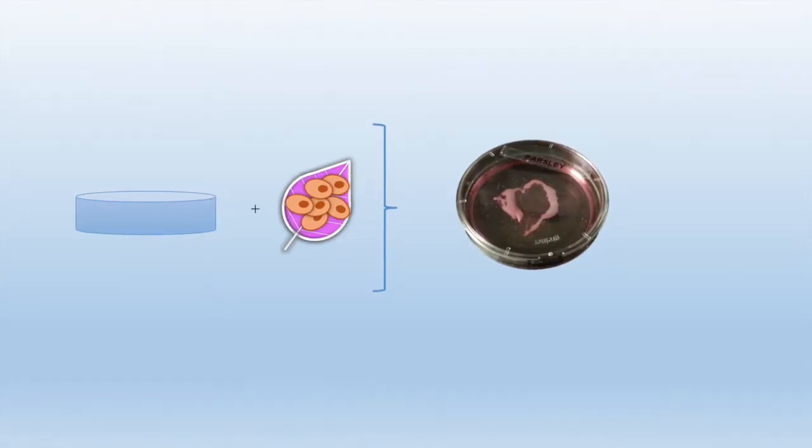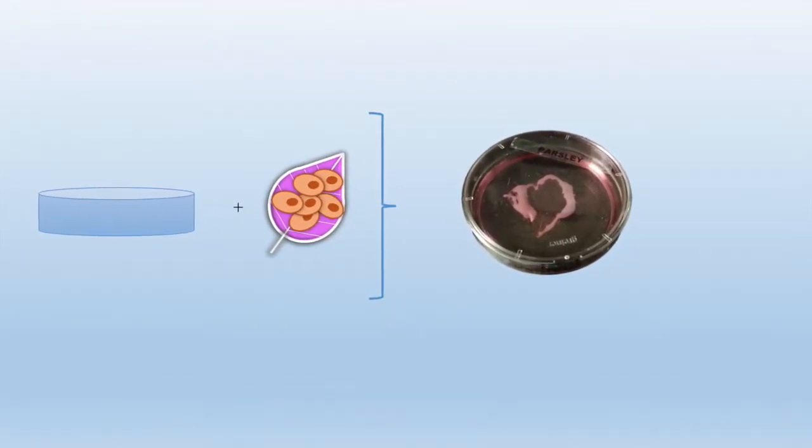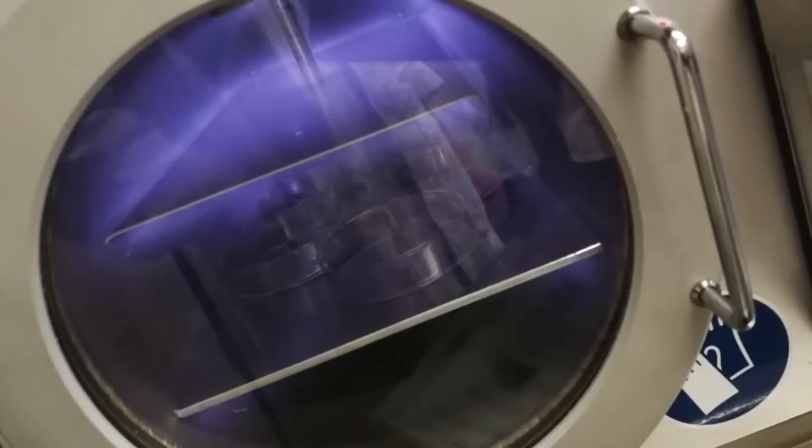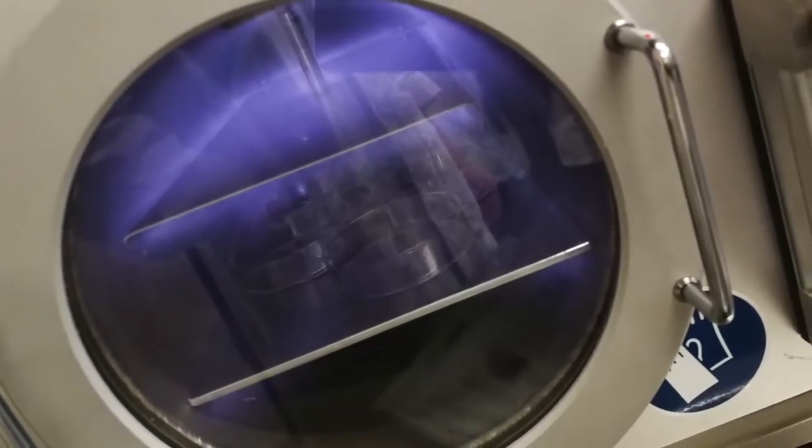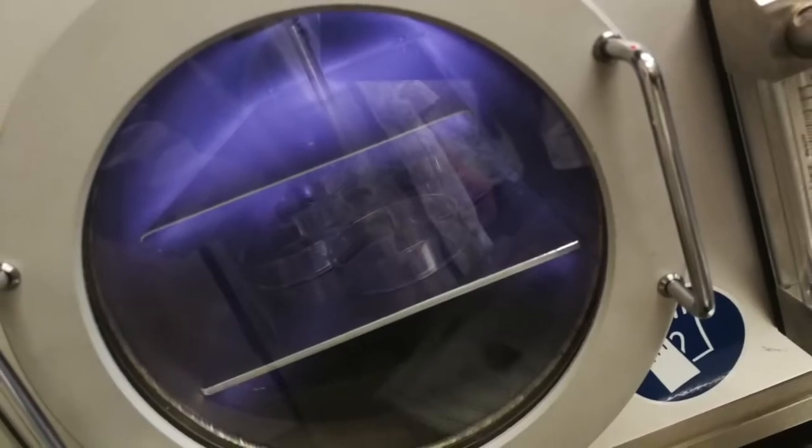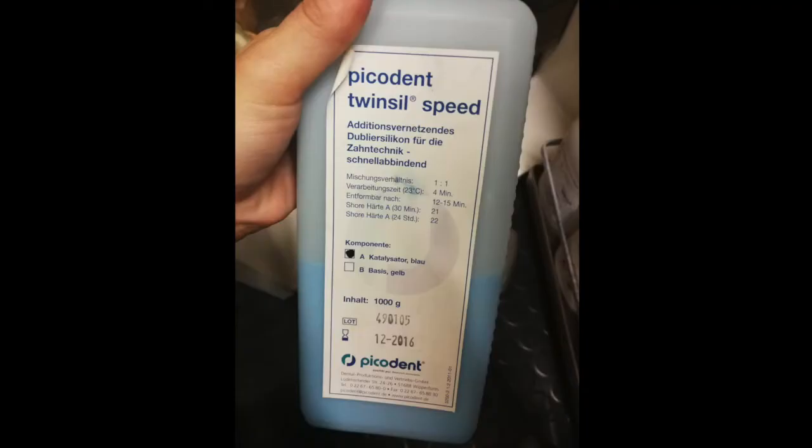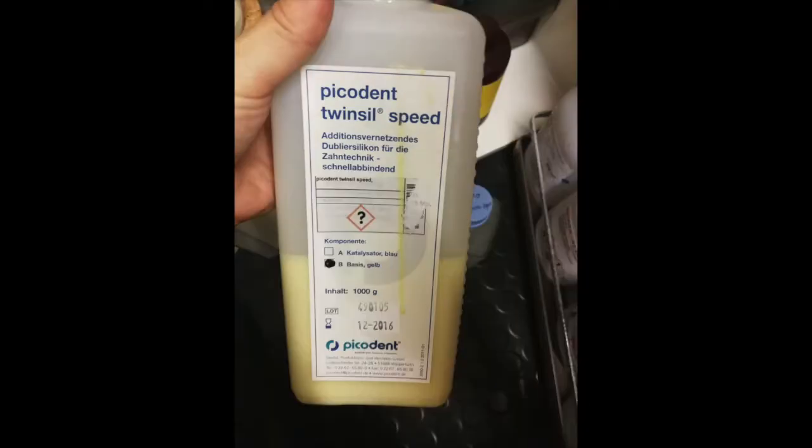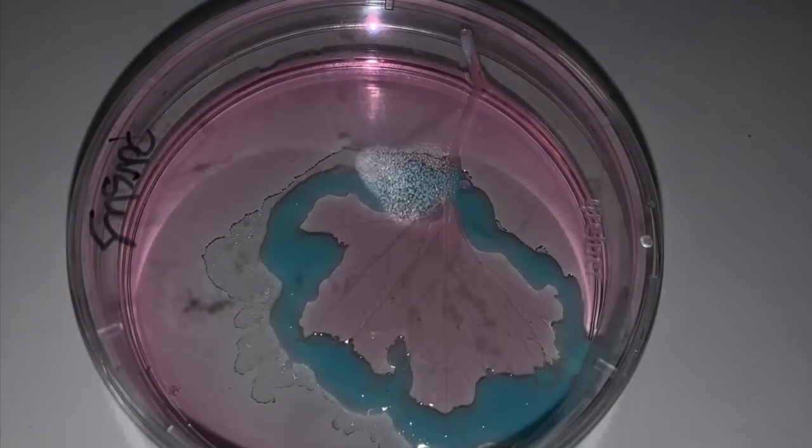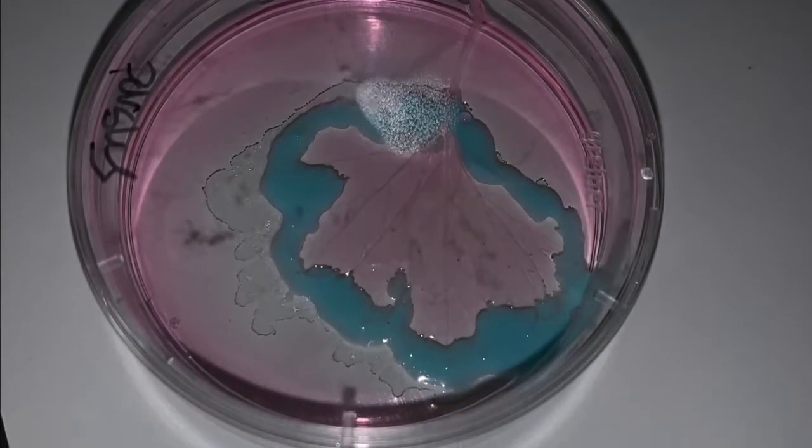The next milestone was to recellularize the scaffolds. First of all, the petri dishes were treated with a plasma system to make them more hydrophilic. The decellularized leaves were then attached to the petri dish with a biocompatible two-component dental glue. After 5 to 10 minutes, the mixed glue solidifies.